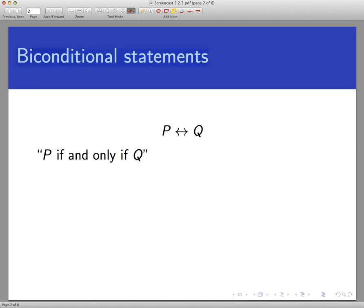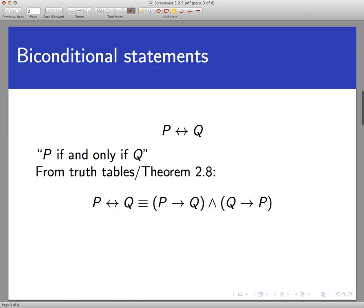So a little bit of review here. What is a biconditional statement? We use the double-headed arrow for the symbol, and typically we read this P if and only if Q. A biconditional statement is a relationship between two statements. It basically says they are logically the same, meaning they have the same truth values in all possible situations.